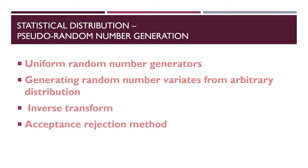The acceptance-rejection method is the last topic of this chapter. The inverse transformation method is the most general method for generating random variables from any distribution function, provided the distribution function can be written in explicit form and its inverse can be computed analytically — for example, the exponential variable and the Cauchy distribution both have analytically computable inverses.